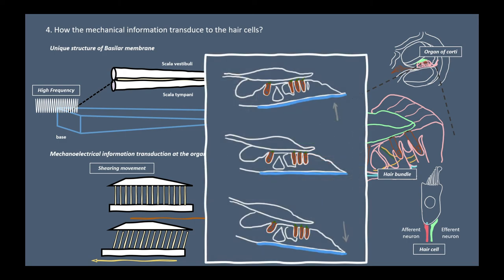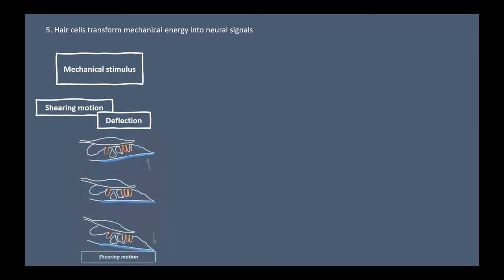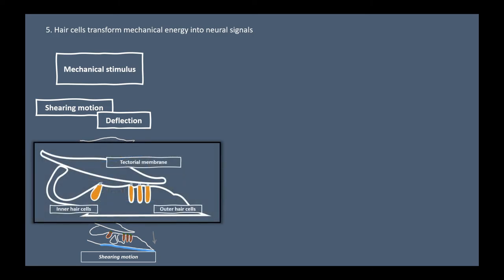When the basilar membrane moves, the hair bundle of the hair cell that are connected to the tectorial membrane deflects. This is the mechanical stimulus for the hair cells. The hair cells receive the mechanical stimuli by the shearing motion and deflection. But not all the hair cells receive the mechanical stimuli by the shearing motion. Only the outer hair cells are connected to the tectorial membrane, but not the inner hair cells. The hair bundle of the inner hair cells are deflected by the flow of the liquid in the scalae.